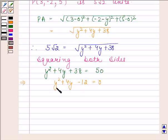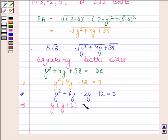Now we will factorize this by splitting the middle term. So y² + 4y - 12 = 0 implies y² + 6y - 2y - 12 = 0. This implies y(y+6) - 2(y+6) = 0. This implies (y+6)(y-2) = 0.